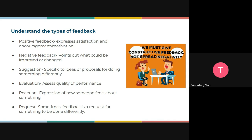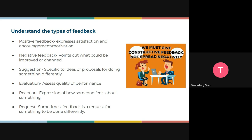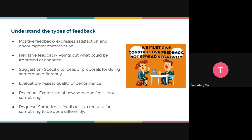We have negative feedback, known as constructive criticism — here we point out what could be improved. When giving negative feedback, you have to be very careful so the person understands that you are criticizing their idea, not them as a person. We also have suggestions — specific ideas or proposals, like 'let me consider this instead of that.' Then we have evaluation — assessing the quality of performance. And reaction — expressing how someone feels about something. Finally, requests — feedback that asks for something to be done differently.